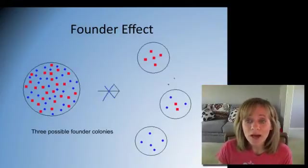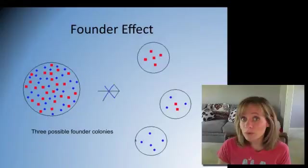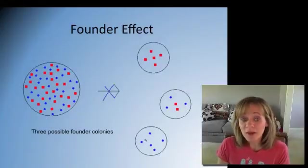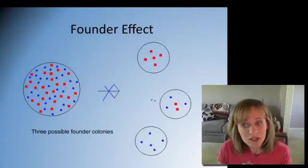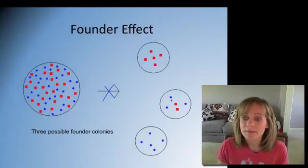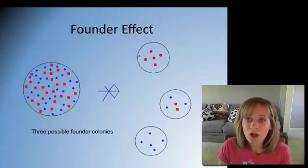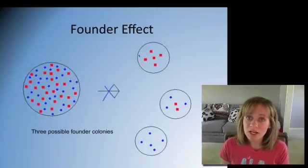So we could have one colony that's all red. We could have one colony that's all blue. Or we could actually, by chance, get a colony that might actually represent the original one. But the chances of that probably are not too likely. So the founder effect, a splinter colony, does not resemble, as far as genetics, the original population.